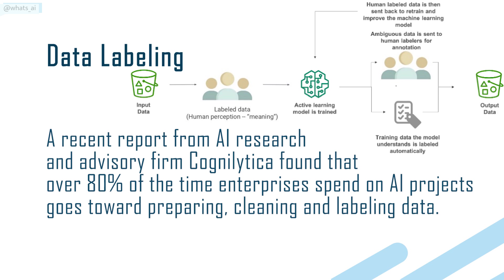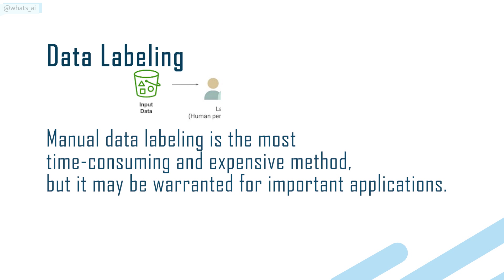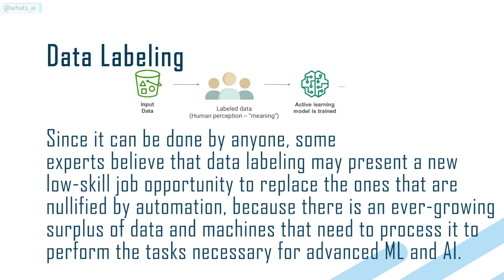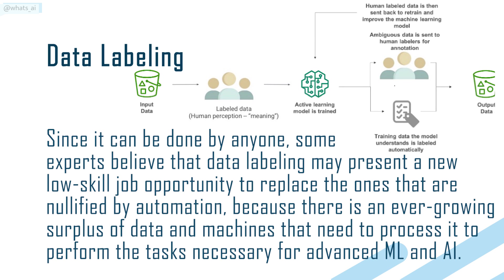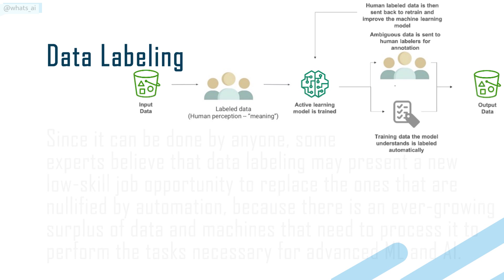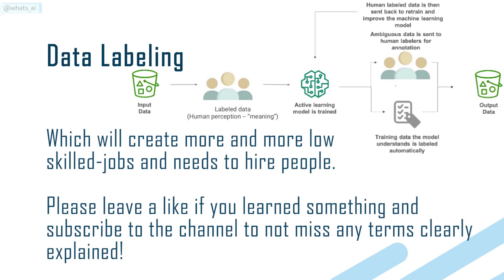A recent report from AI research and advisory firm Cognolitica found that over 80 percent of the time enterprises spend on AI projects goes toward preparing, cleaning, and labeling data. Manual data labeling is the most time-consuming and expensive method, but it may be warranted for important applications. Some experts believe that data labeling may present a new low-skilled job opportunity to replace jobs nullified by automation, as there is an ever-growing surplus of data and machines that need to process it for advanced ML and AI.